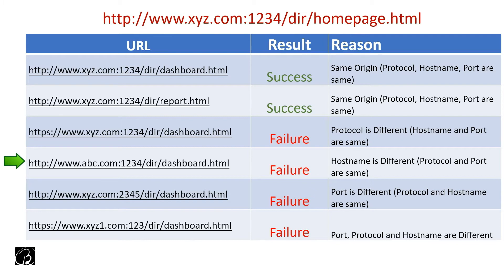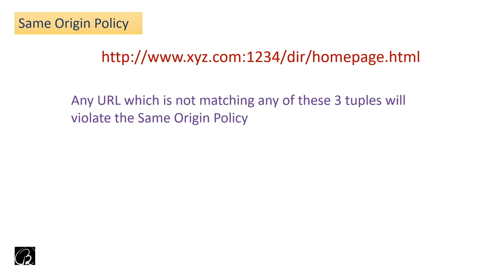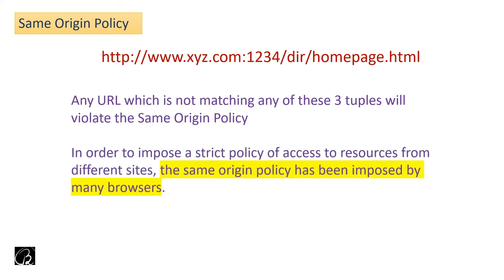The fifth URL uses the same protocol and domain, but a different port (2345 instead of 1234), so it fails — it's from a different origin. The last URL has a different protocol, different domain, and different port, so it's definitely from a different origin. From these examples, only the first two URLs are from the same origin. Any URL not matching all three tuples violates the Same Origin Policy.